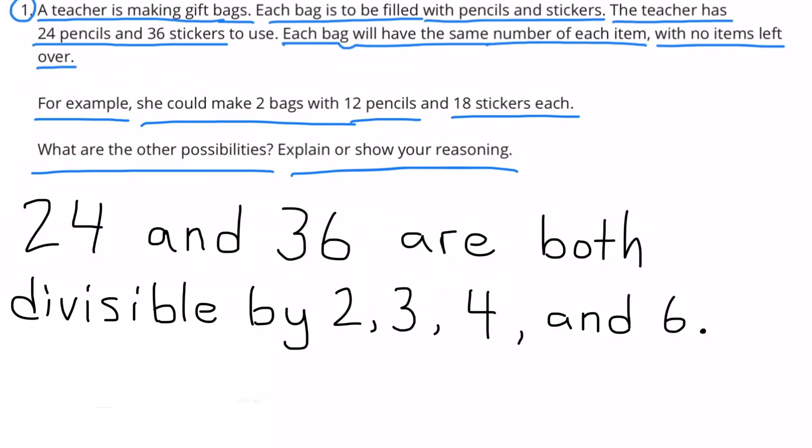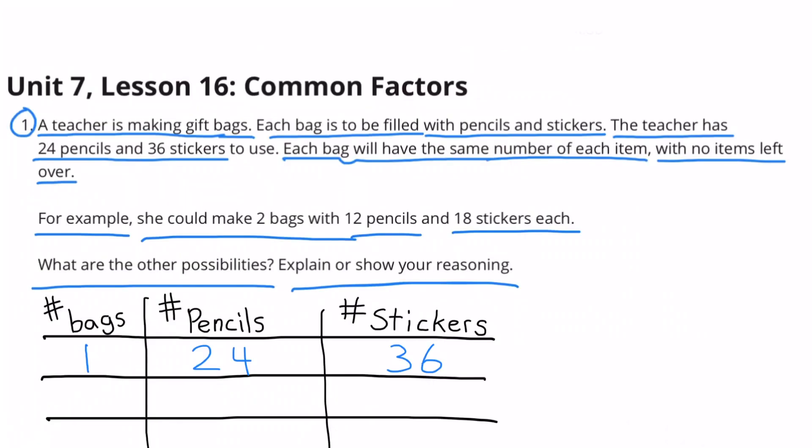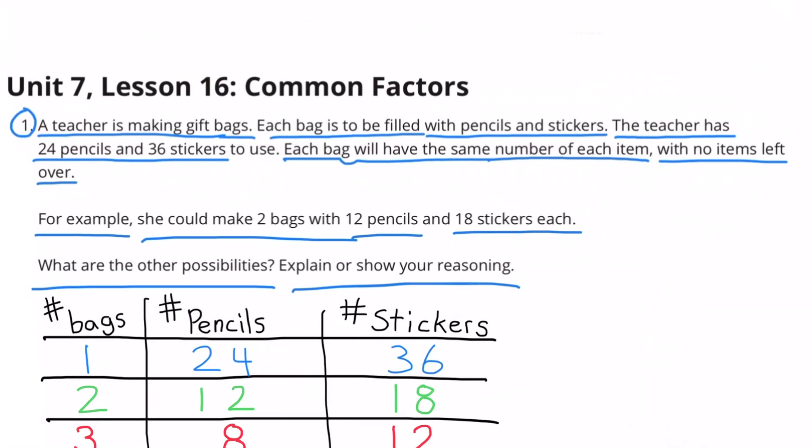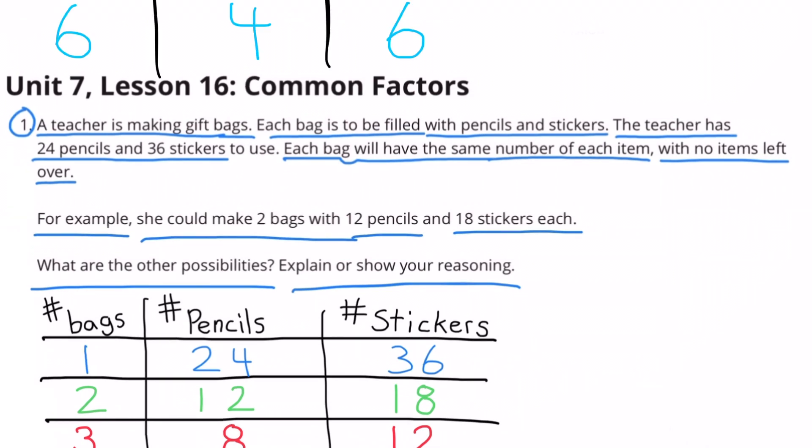24 and 36 are both divisible by 2, 3, 4, and 6. I've made a table to help me through this. 1 bag has 24 pencils and 36 stickers. 2 bags has 12 pencils and 18 stickers. 3 bags has 8 pencils and 12 stickers. 4 bags has 6 pencils and 9 stickers. And 6 bags has 4 pencils and 6 stickers.